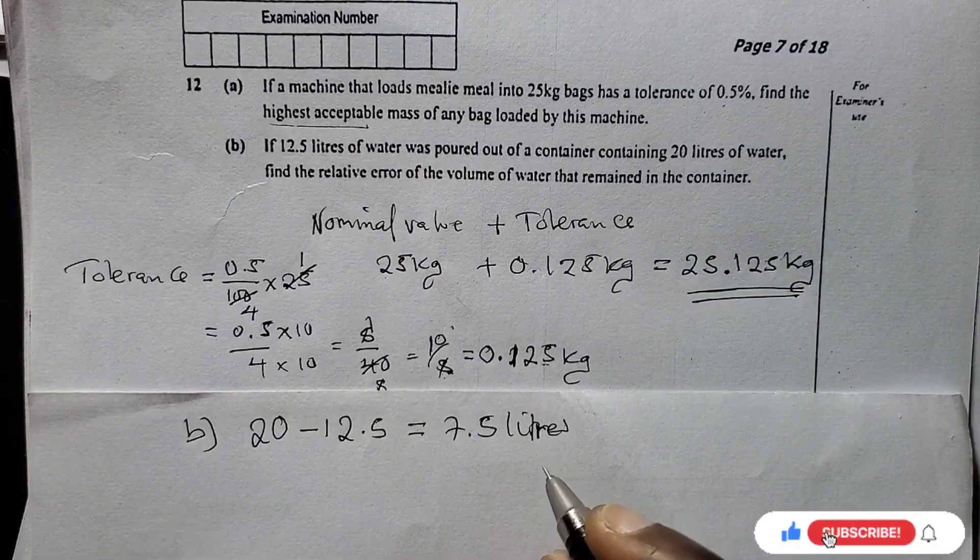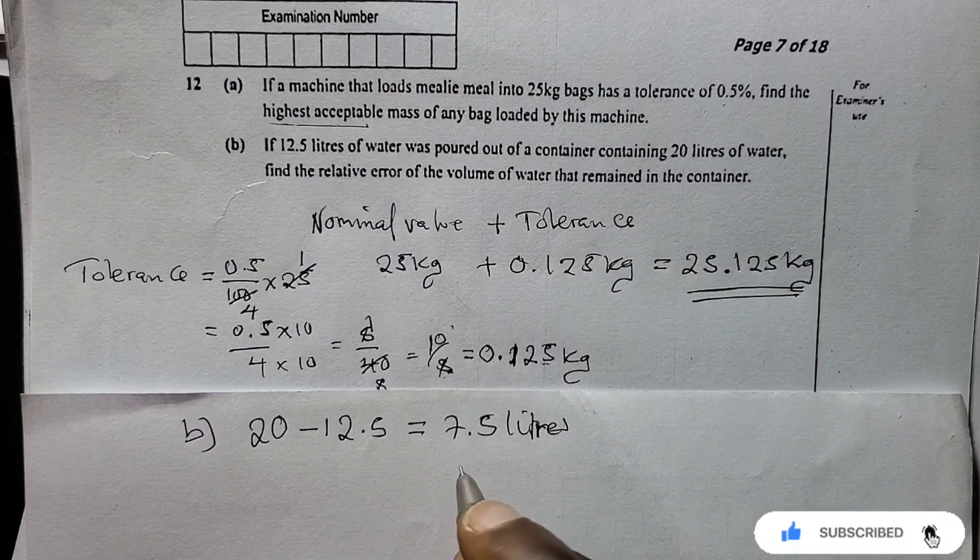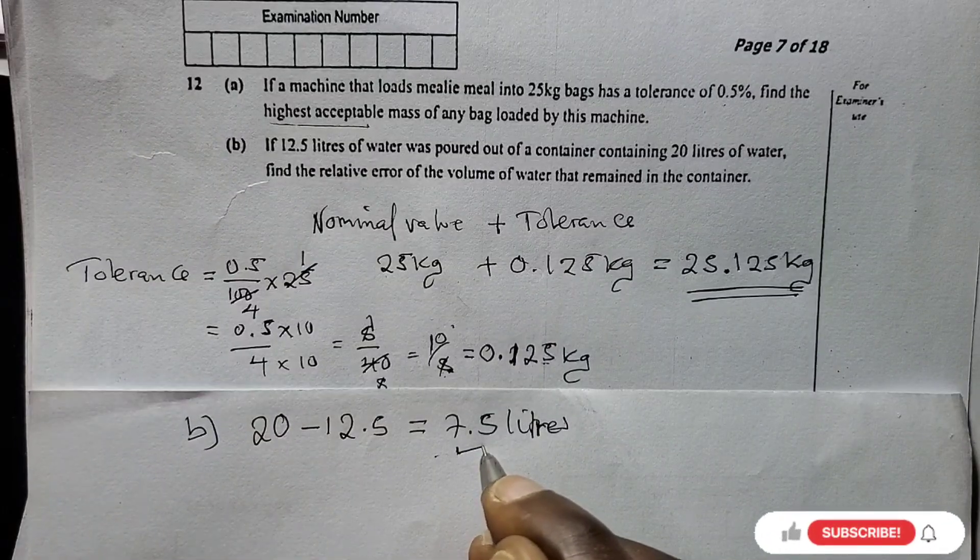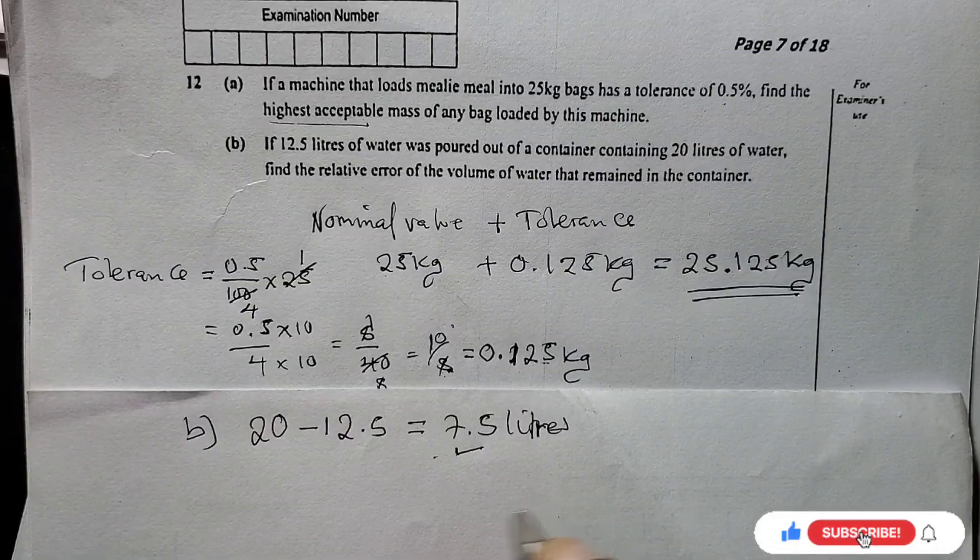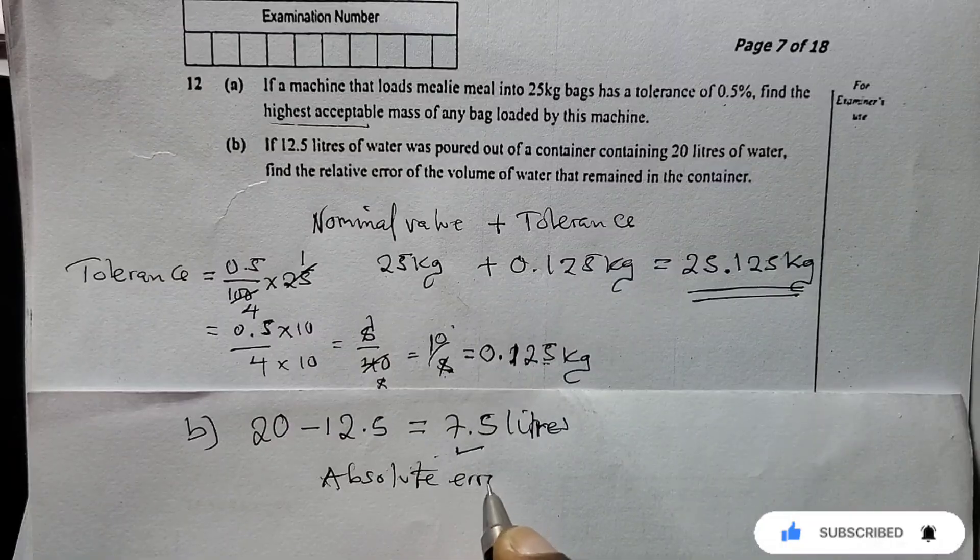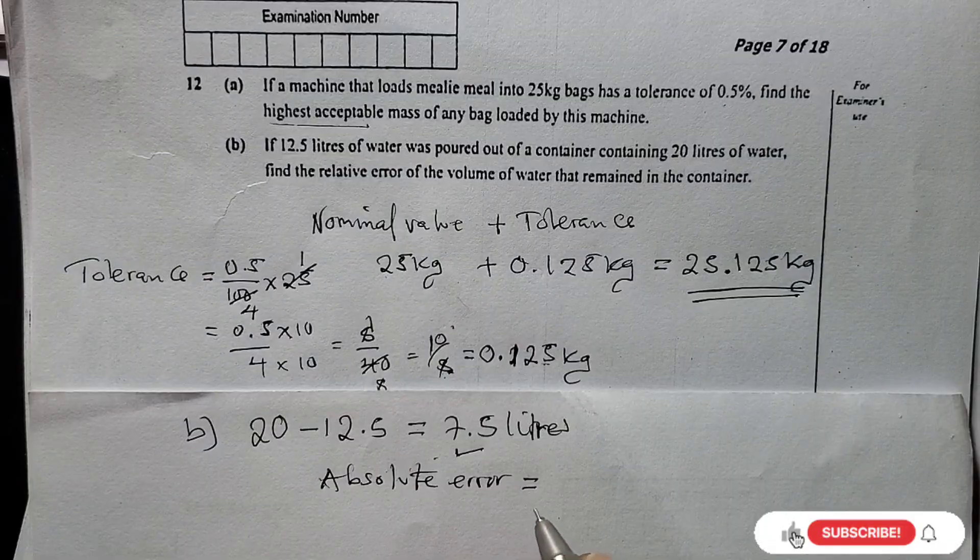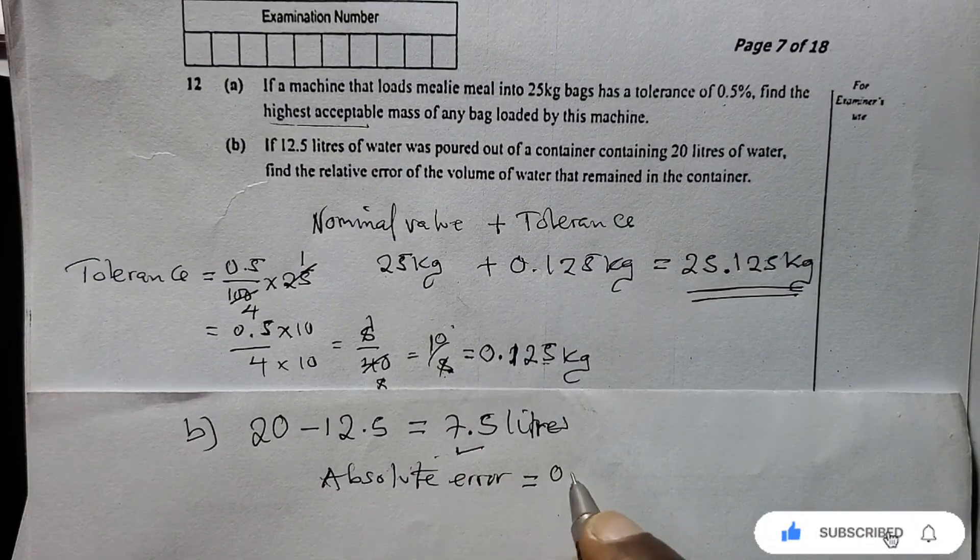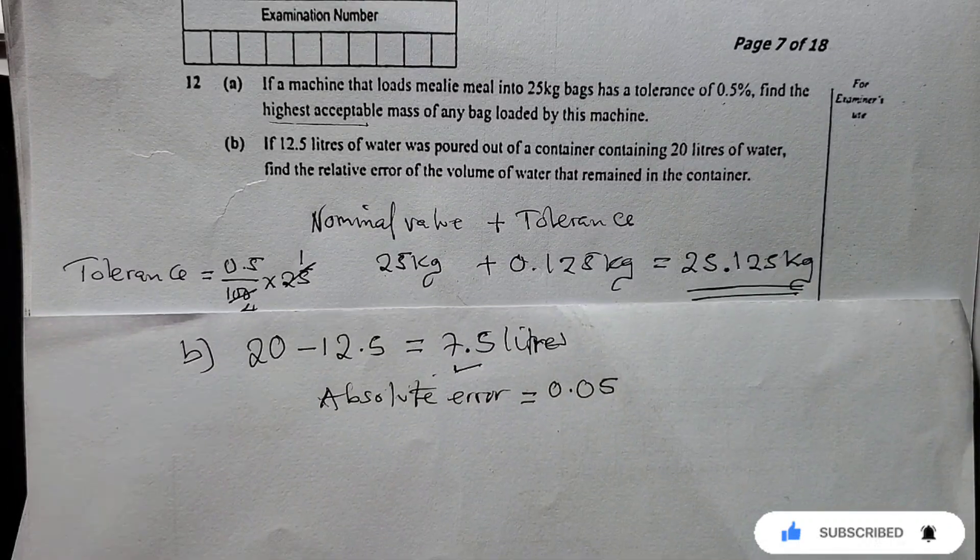This is the amount of water that remains. They just want us to calculate the relative error of this value. To find relative error, we need to know the absolute error. The absolute error of a number raised to one decimal place is 0.05.